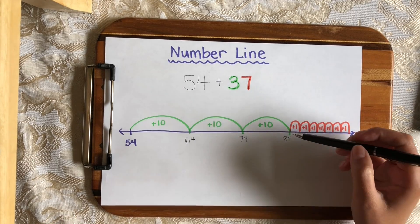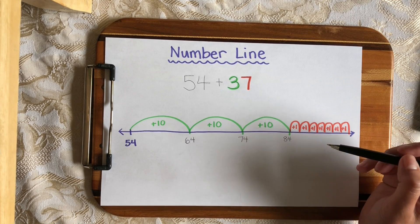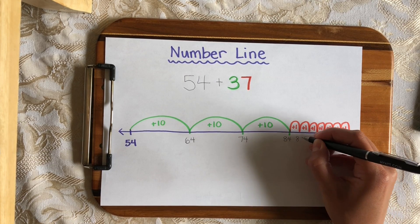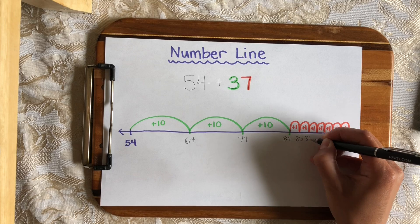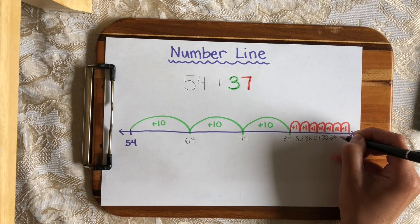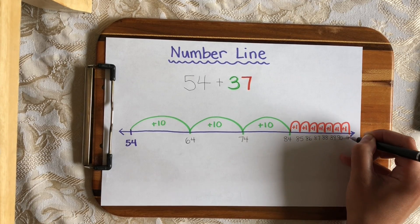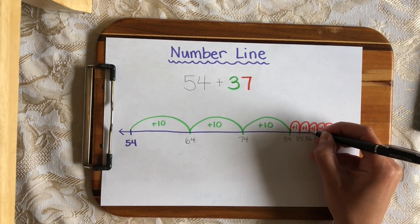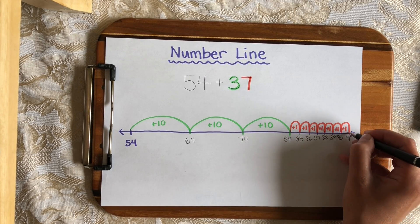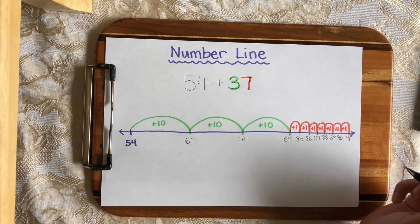And now I have to be really careful because I'm making hops of 1 instead of 10. So 1 more than 84 is 85, and then 86, 87, 88, 89, 90, 91. And you really have to be careful when you put in those numbers to make sure that you're not skipping any hops and that they're directly below the hops.